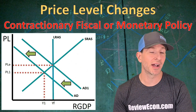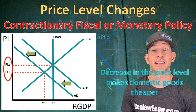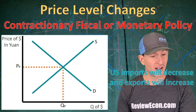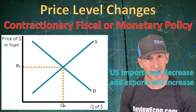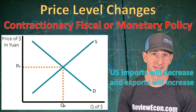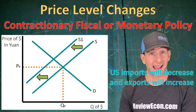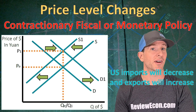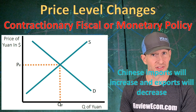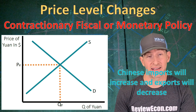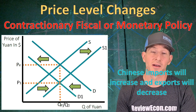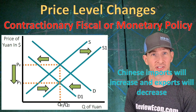If instead we see contractionary fiscal and monetary policy, that will cause our price level to decrease. That lower price level makes our domestic goods cheaper and foreign goods will be relatively more expensive as a result. Over on the foreign exchange market for the US dollar, US imports are going to decrease as foreign goods become relatively more expensive, and exports are going to increase because our goods are relatively cheaper. That means the supply of US dollars is going to decrease and the demand for US dollars is going to increase — both of those shifts cause the US dollar to appreciate. Over on the Chinese yuan graph, since we have an increase in Chinese imports and a decrease in Chinese exports, we're going to see an increase in the supply of Chinese yuan and a decrease in the demand for Chinese yuan — both shifts cause the Chinese yuan to depreciate.